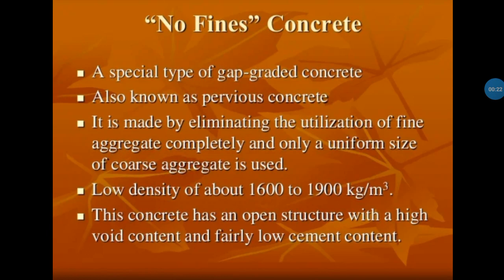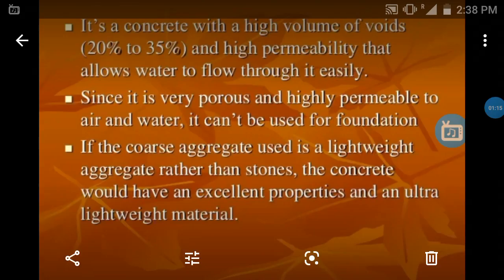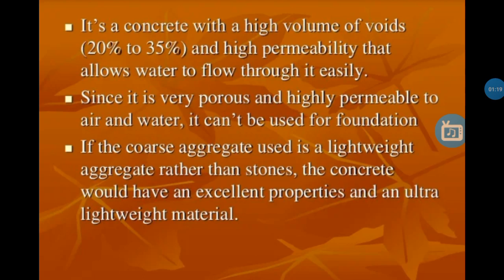Pervious concrete is made by eliminating the utilization of fine aggregate completely, and only a uniform size of coarse aggregate is used. This is called no-fines concrete. The density is low, about 1600 to 1900 kg per m³. This concrete has an open structure with a high void content of 25 to 35 percent, fairly low cement content, and high permeability that allows water to flow through it easily.